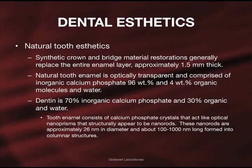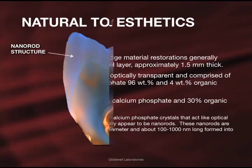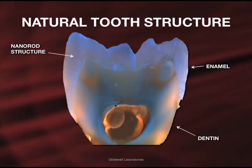Natural tooth enamel is optically transparent and consists of a combination of inorganic calcium phosphate and organic and water molecules. Tooth enamel is approximately 1.5 millimeters in thickness, with a unique columnar structure comprised of nano-rods with a diameter of approximately 26 nanometers and a length of approximately 100 to 1,000 nanometers.